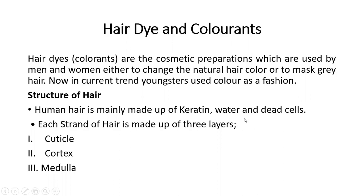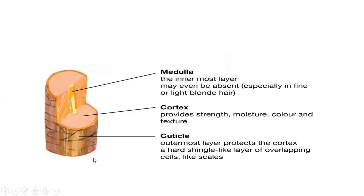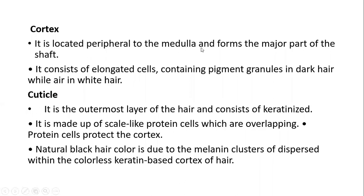Before starting about hair dyes and colorants, let me discuss the structure of hair. Human hair is mainly made up of keratin, water, and dead cells. Each strand of hair has three layers: the cuticle, cortex, and medulla. The cuticle is the outermost layer — a hard, scale-like layer of overlapping cells. The cortex provides strength, moisture, color, and texture to the hair. The cortex is located peripheral to the medulla and forms a major part of the shaft.